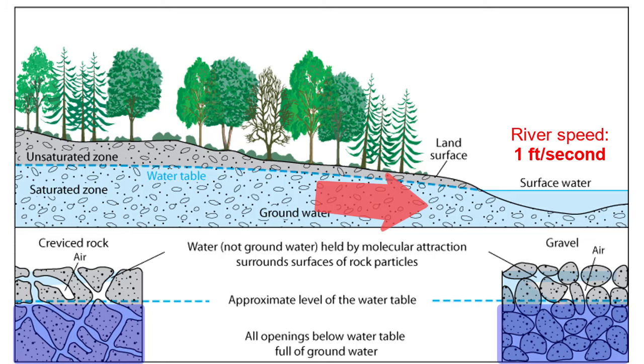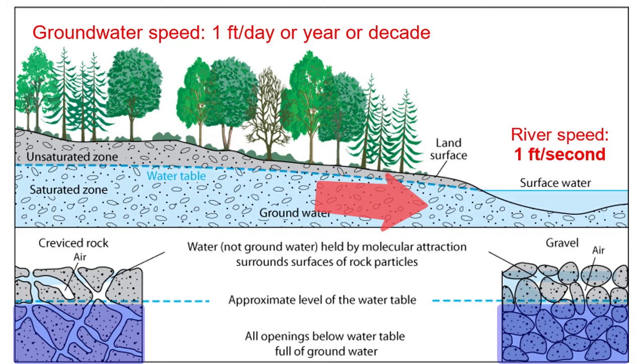Rivers move at speeds of about a foot per second, while the fastest groundwater moves at a rate of a foot per day and the slowest groundwater is moving at a foot per year or decade.